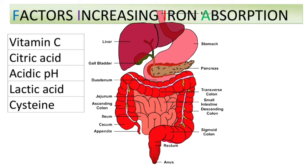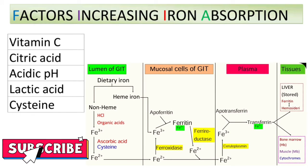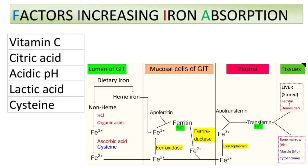The gastric HCl and organic acids in the diet convert the organic ferric compounds of the diet into free ferric ions. These ferric ions are then reduced by ascorbic acid and cysteine of the food to the more soluble ferrous form. In general, the factors which increase iron absorption form complexes with iron and increase its solubility.